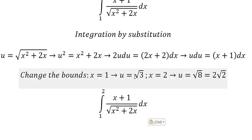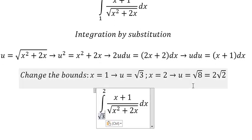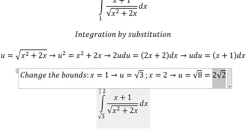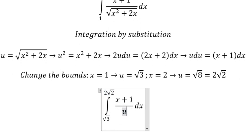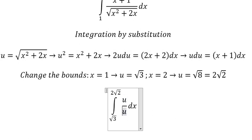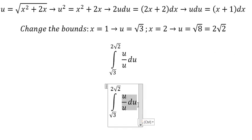Number 1 we change for the square root of number 3. Number 2 we change for this one. The square root we change for u. x plus 1 dx will change for u du. This one we change for du.